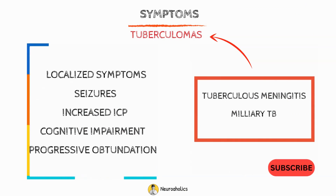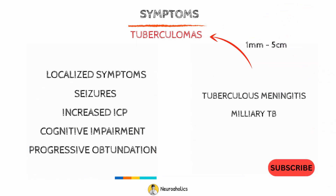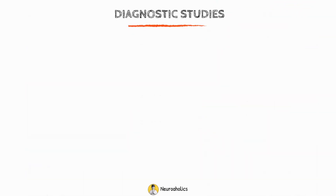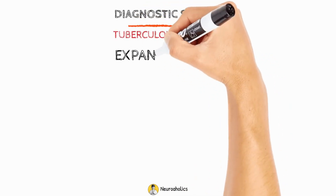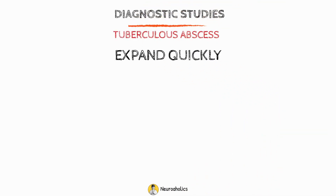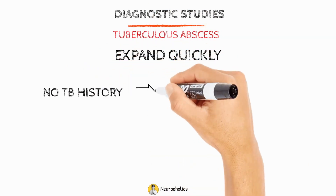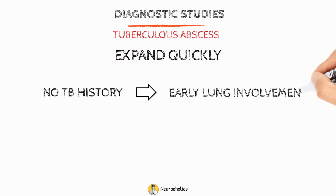Tuberculomas come in sizes between 1 mm and 5 cm. Compared to tuberculomas, abscesses often expand more quickly. Even in individuals without a documented history of past TB, chest radiographs often reveal evidence of earlier pulmonary involvement.